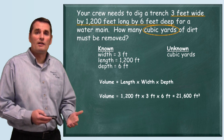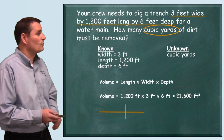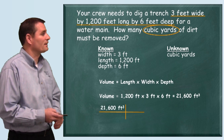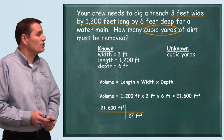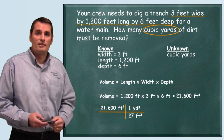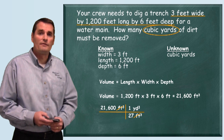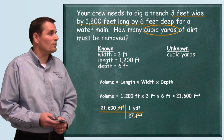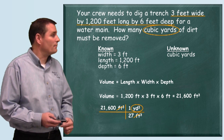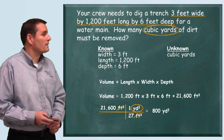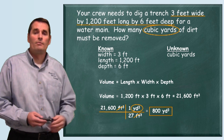We need cubic yards, so we're going to do a unit conversion to convert our cubic feet to cubic yards. We start with the 21,600 cubic feet and use the equivalent that there are 27 cubic feet for every one cubic yard. We plug that in, the units of cubic feet cancel each other out, and we're left with cubic yards. So 21,600 divided by 27, we find that we'll remove 800 cubic yards of dirt for this problem.